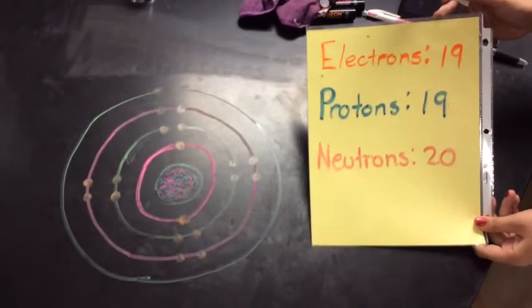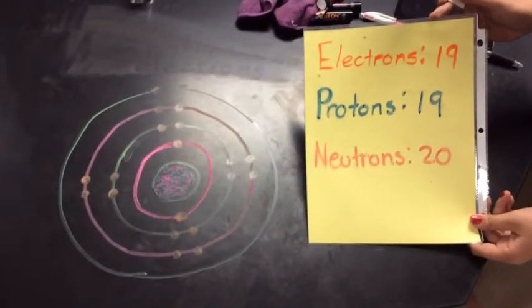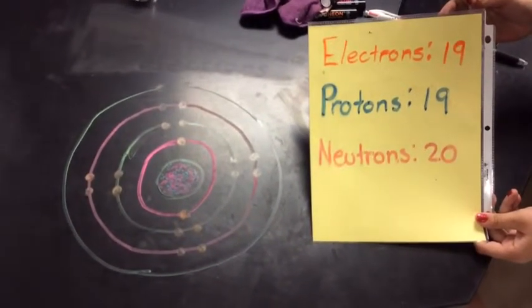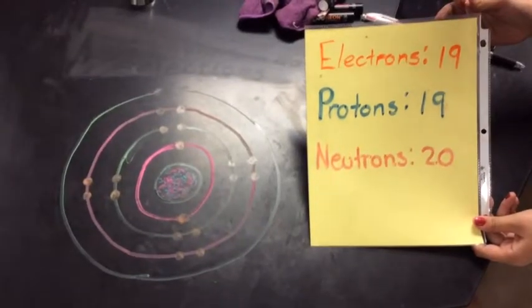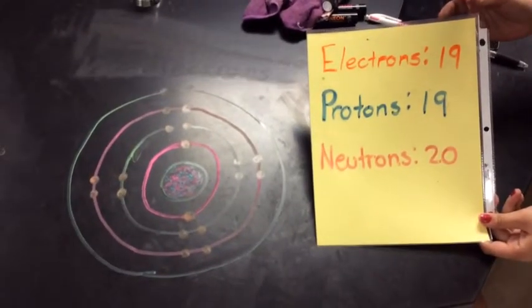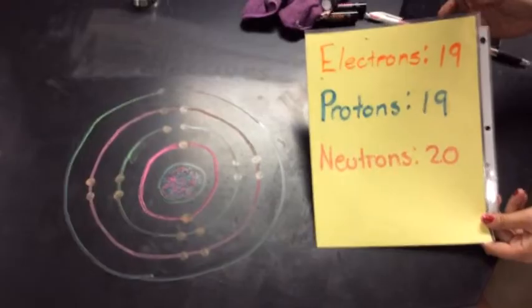You see, the difference between isotopes are that they can have different numbers of neutrons, and therefore different masses. Each isotope has different properties because of its different mass.